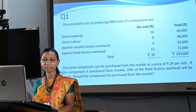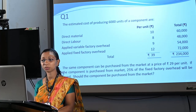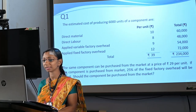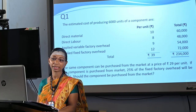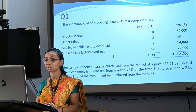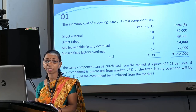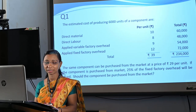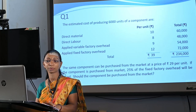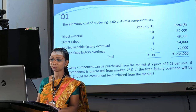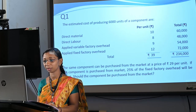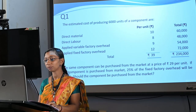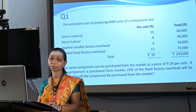Now I will go into a question. The estimated cost of producing 6,000 units of a component are: direct material Rs. 10 per unit, total Rs. 60,000; direct labor Rs. 8 per unit, total Rs. 48,000; applied variable factory overhead Rs. 9 per unit, total Rs. 54,000; applied fixed factory overhead Rs. 12 per unit, total Rs. 72,000. The total per unit cost is Rs. 39 and total cost Rs. 2,34,000. The same component can be purchased from the market at Rs. 29 per unit. If the component is purchased from market, 25% of the fixed factory overhead will be saved. Should the component be purchased from the market?